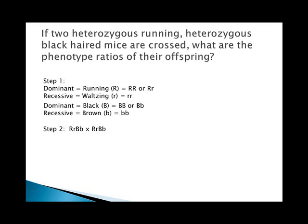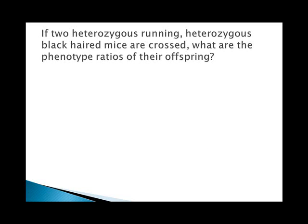Those four combinations represent the four possible ways to form sperm or egg from that genotype. Now we set up the Punnett square. Because there are four possibilities on each side, it's a four by four — sixteen square Punnett square. The headings are: big R big B, big R little b, little r big B, little r little b — same on both sides.